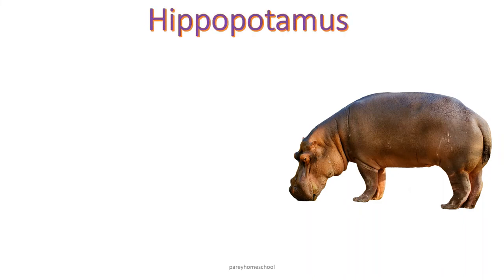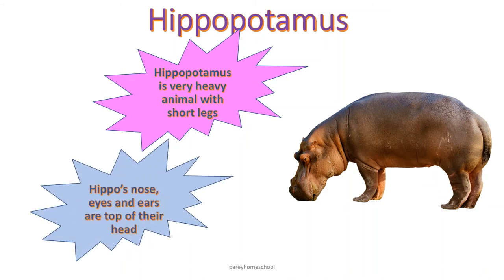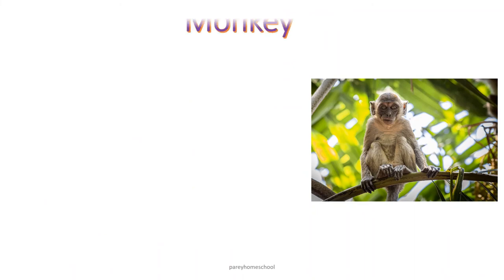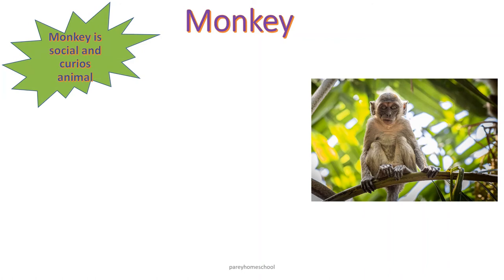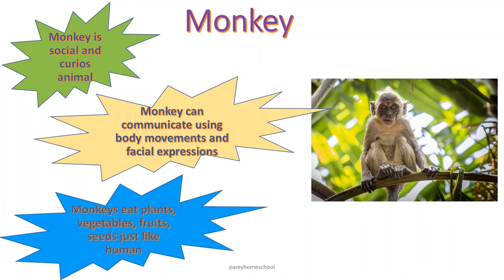This is hippopotamus. Hippopotamus is a very heavy animal with short legs. Hippo's nose, eyes and ears are on top of their body. This is monkey. Monkey is a social animal and it is also a very curious animal. Monkey can communicate using body movements and facial expressions. Monkeys eat plants, vegetables, fruits and seeds, just like humans.